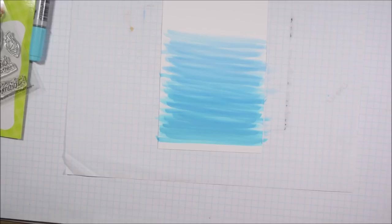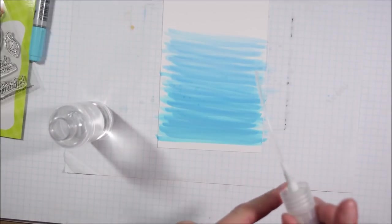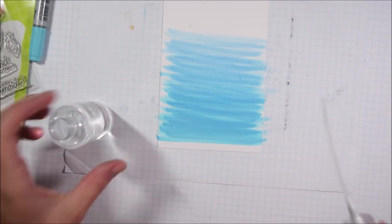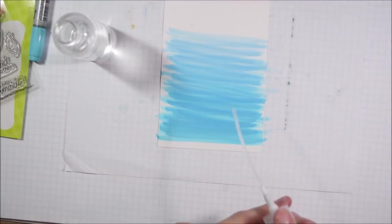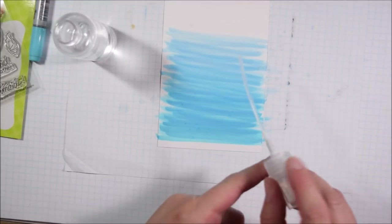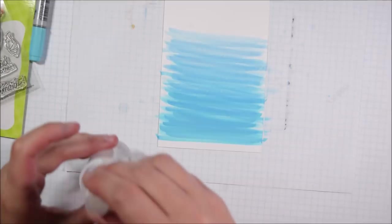Now to create some bubbles in the water to emphasize that it is water you could do a few things. You could use your zero marker and draw in little dots but I find it hard to make it look random when you're using a marker to intentionally place each and every bubble.